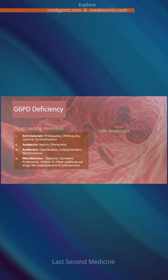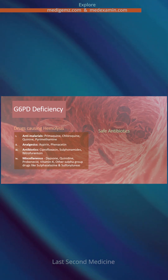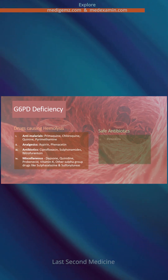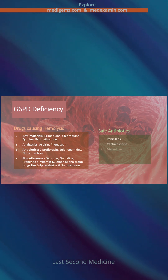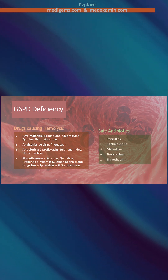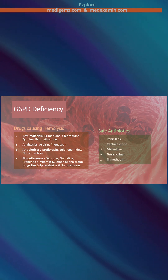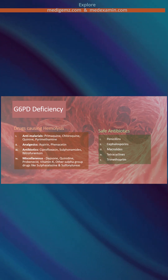On the other hand, antibiotics that are thought to be safe in G6PD deficiency include penicillins, cephalosporins, macrolides, tetracyclines, and trimethoprim.